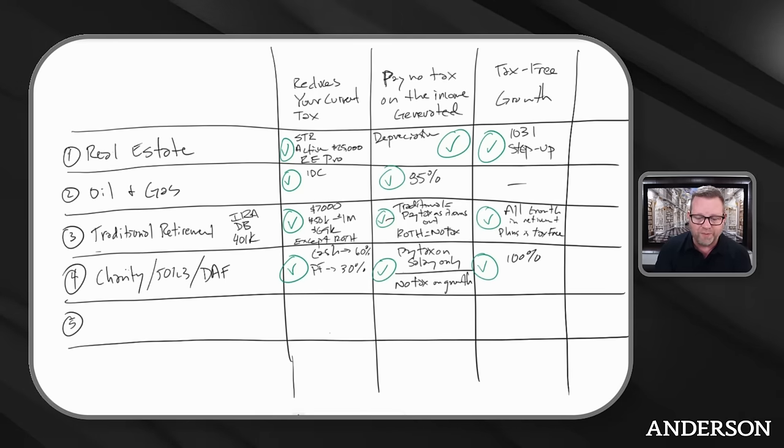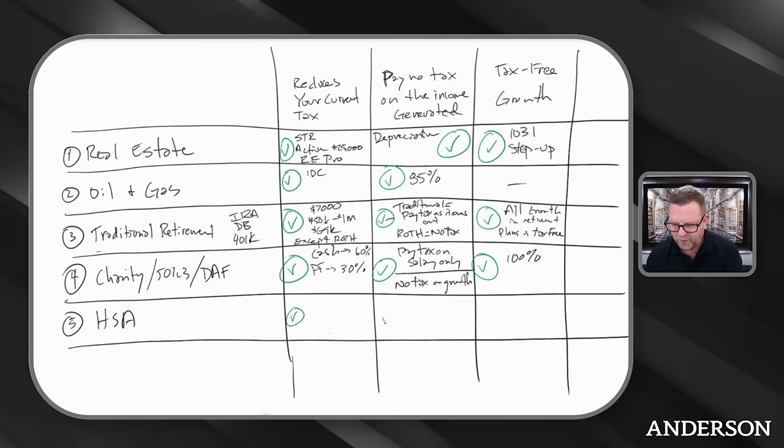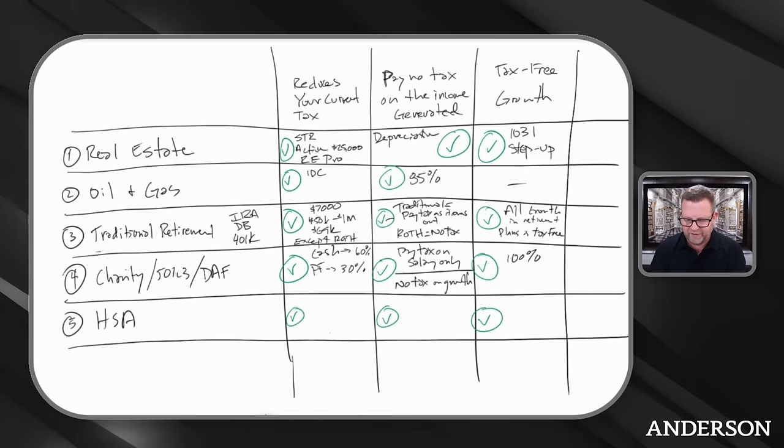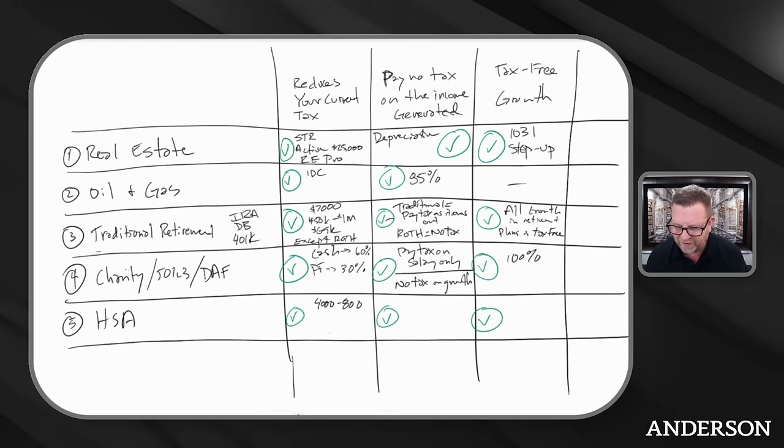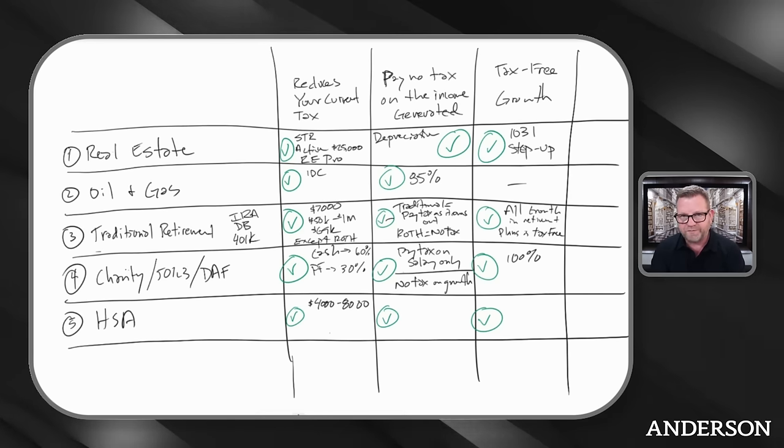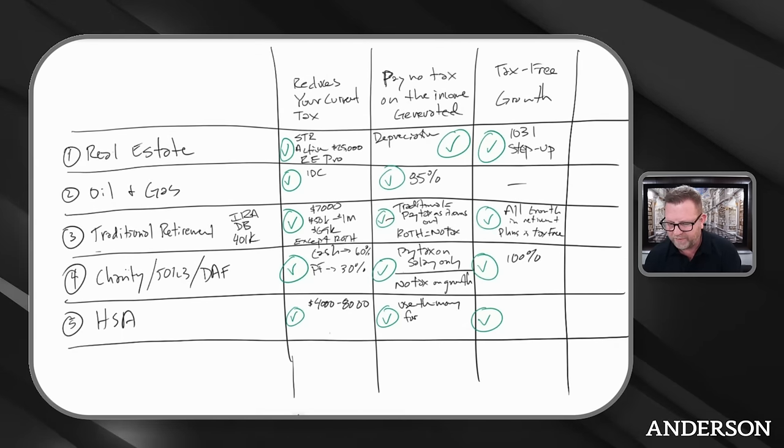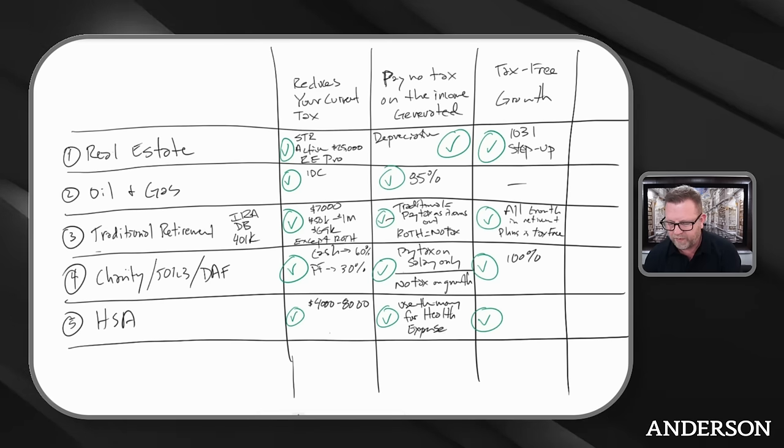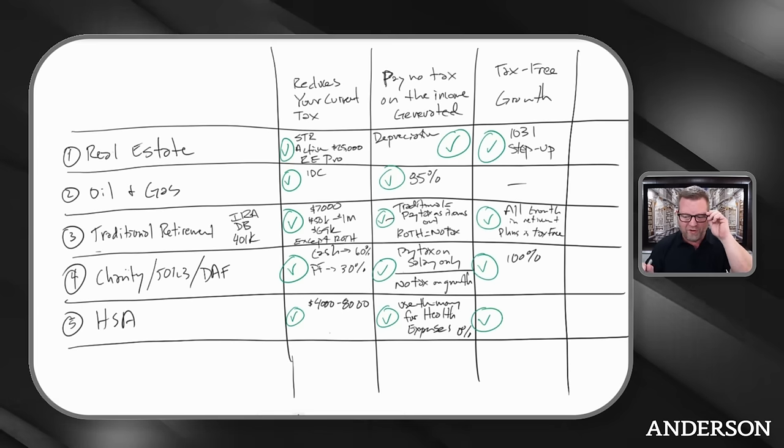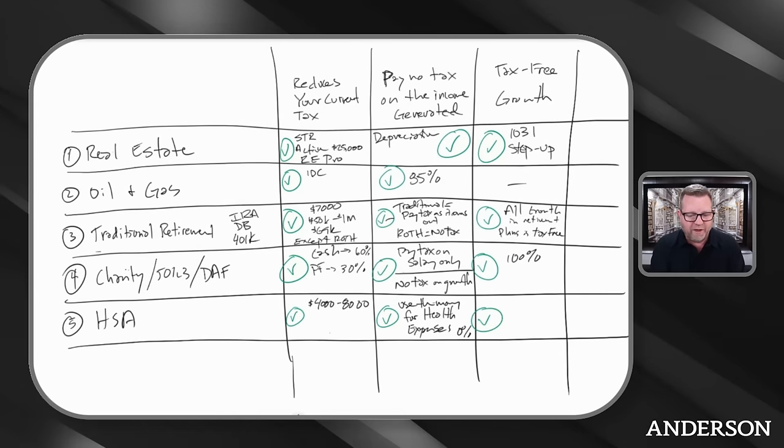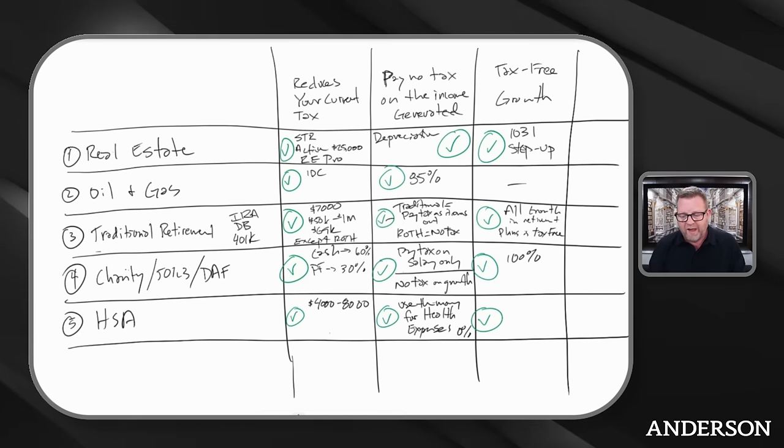Number five, this is what I call the triple threat. Health savings account, because this will check each box. A health savings account allows you to put between about $4,000 and $8,000 a year tax deductible into a plan. As long as you use the money for health expenses, zero percent tax. You get a deduction going in, you pay nothing coming out.